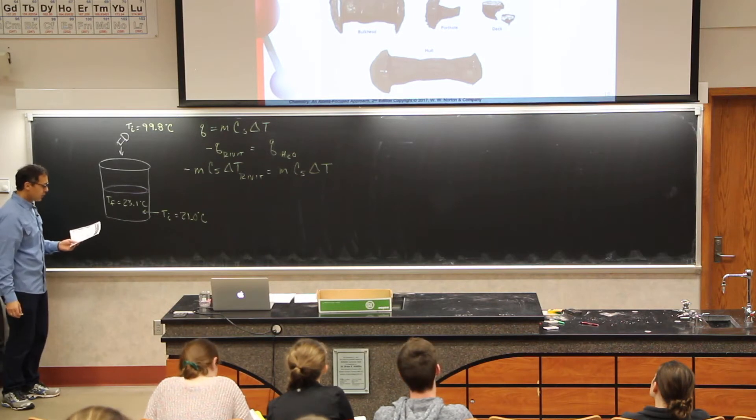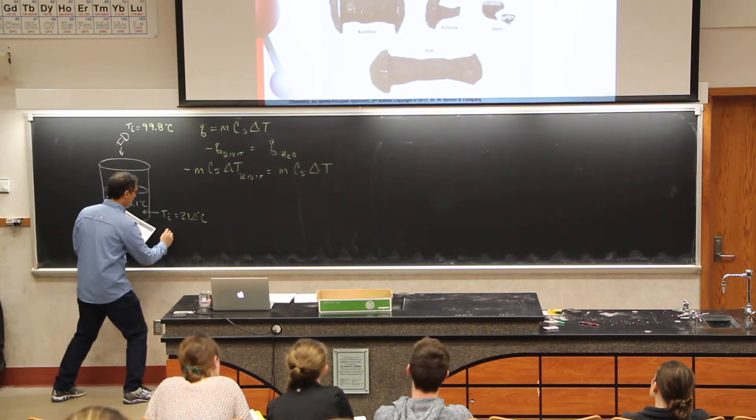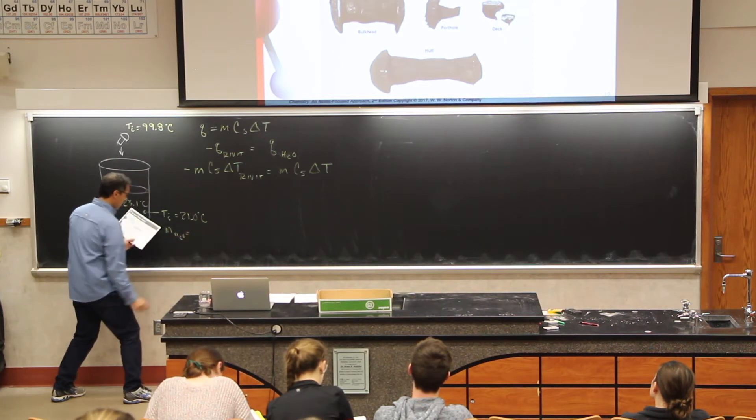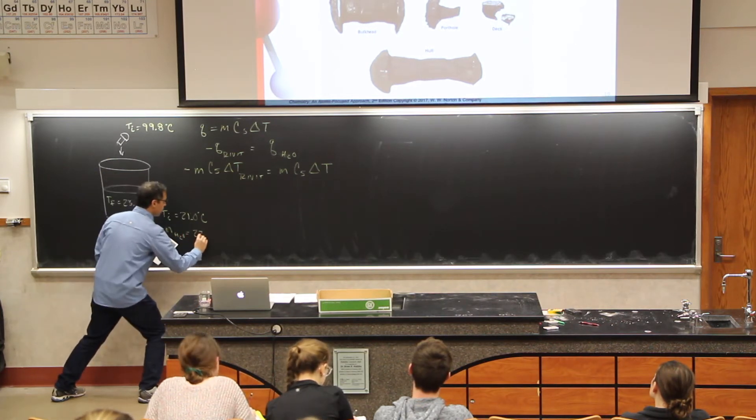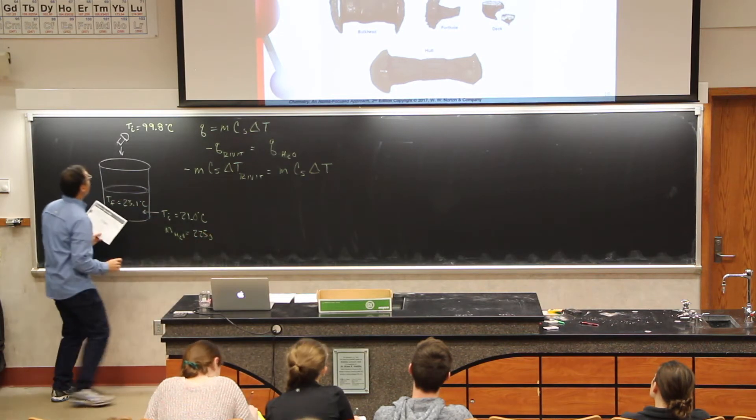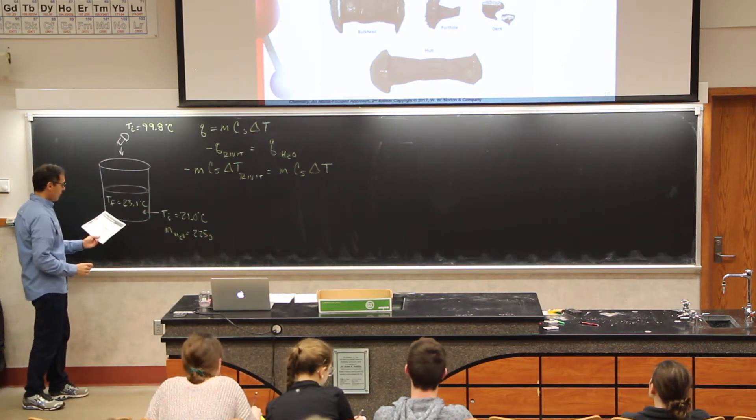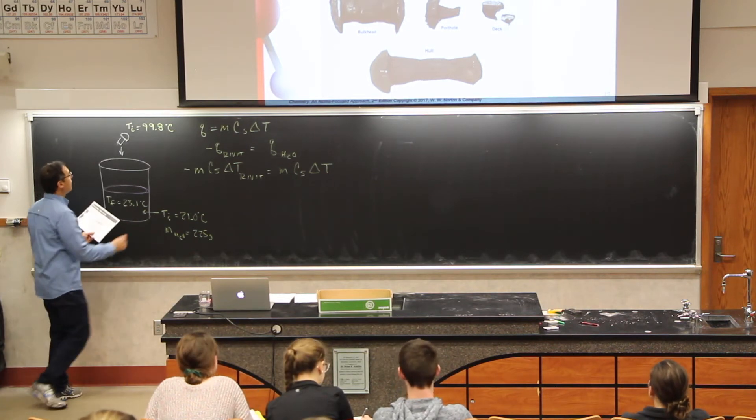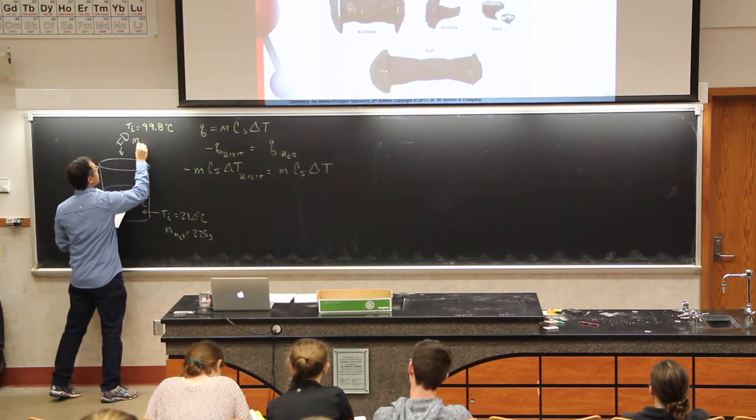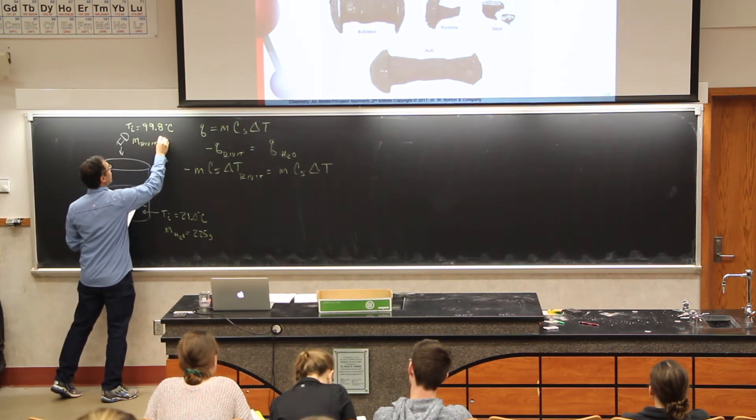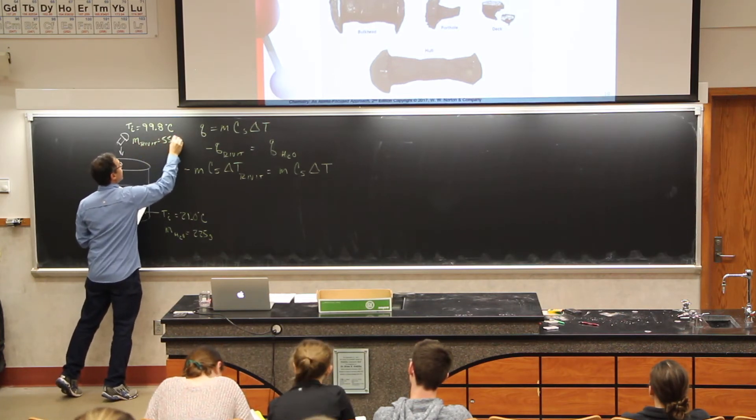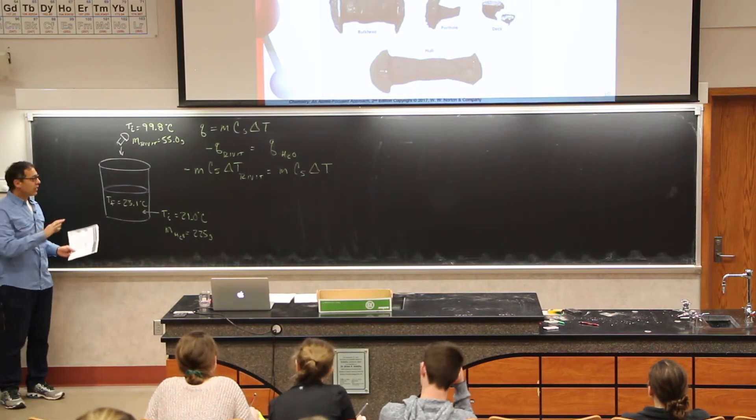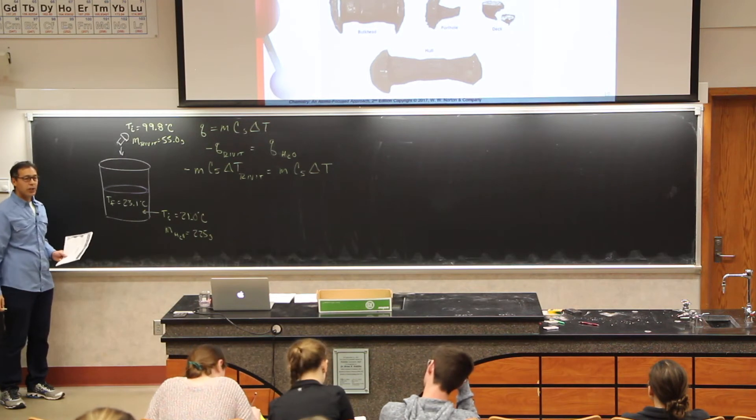And we have some masses in here as well. We have our mass of water, mass of H2O is equal to 225 grams. And our rivet has a mass of 55 grams. So now I can start plugging these numbers into the equation.